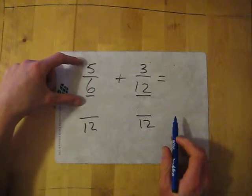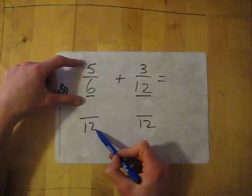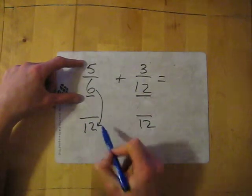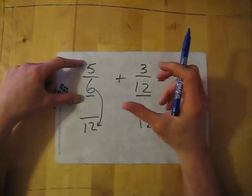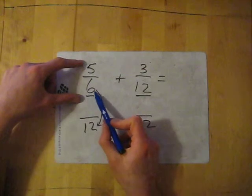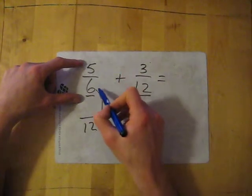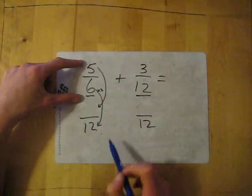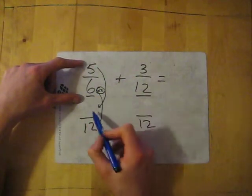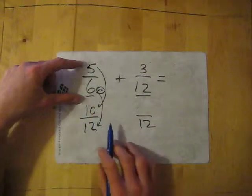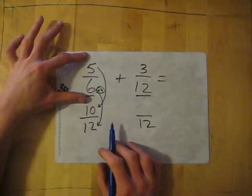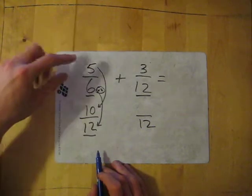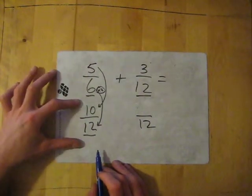Now I'm going to convert this fraction so that it is now out of 12. So I need to think in my head, what have I done to 6 to get to 12? And it's either multiplied or divided. So it's being times by 2. So that means whatever I do to that, I have to do to this number as well. So I have to do 5 times 2 as well. So I've got what we call an equivalent fraction. It's worth the same, but it's got the denominator that we need. So 5/6, we turn it into 10/12.